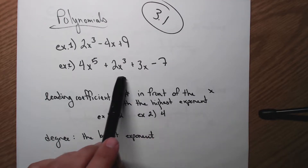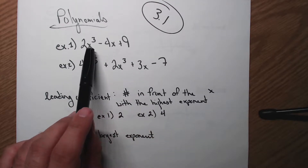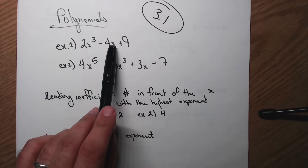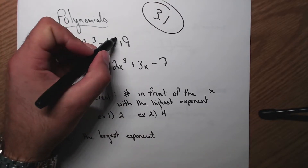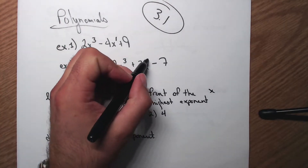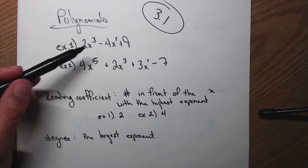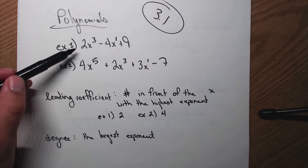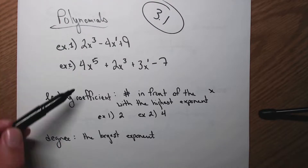Looking at example 1, the highest exponent is x to the 3rd power — that's bigger than just x to the 1st power. So x to the 3rd is my largest degree, my largest exponent. My leading coefficient is the number in front of that, so it's 2 for example 1.